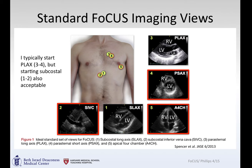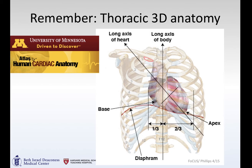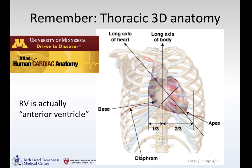Here are the different chambers that you get in the different orientations with each of these views. As a reminder, in thoracic 3D anatomy the right ventricle is the anterior ventricle, and the long axis of the heart is oriented with the base-apex pointing off towards the right shoulder.